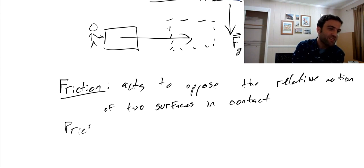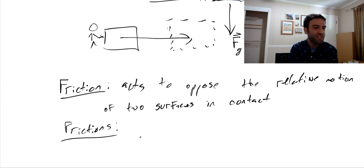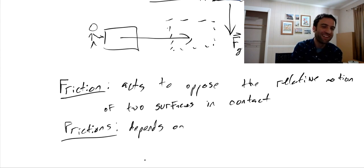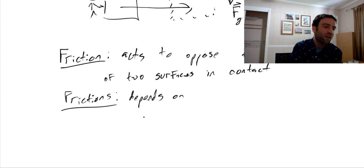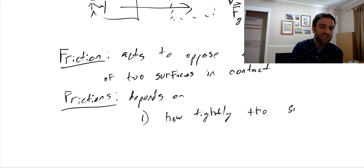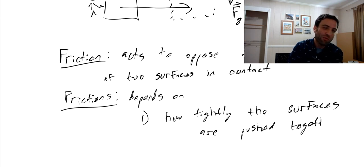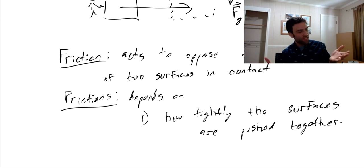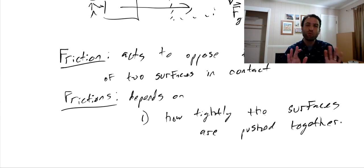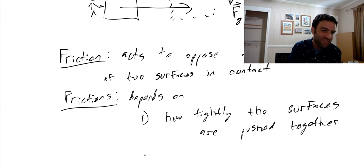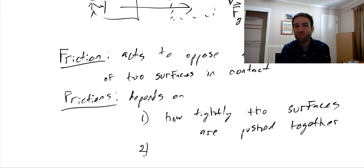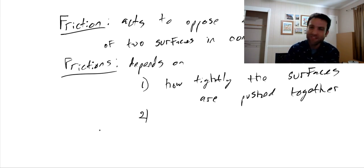Friction depends on three things. First, it depends on how tightly the surfaces are pushed together. You probably have a sense of this if you've ever tried to move an empty bookcase versus a full one — when it's empty it's easier to push, so the force of friction opposing you must be less than when it's filled with books.